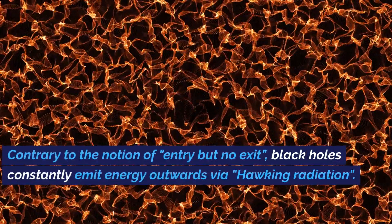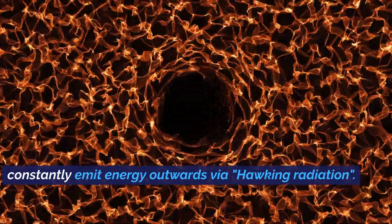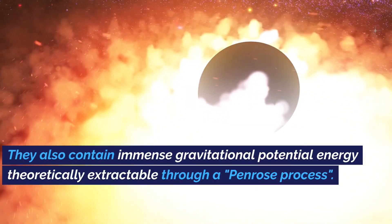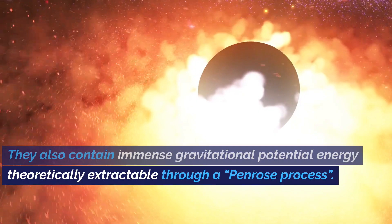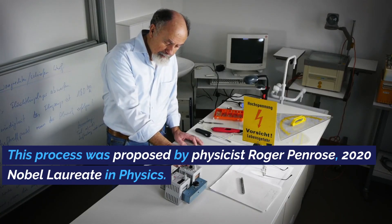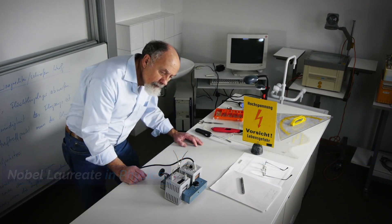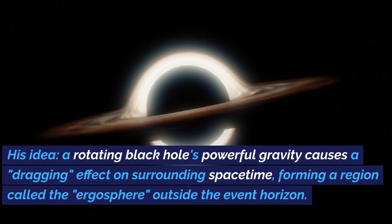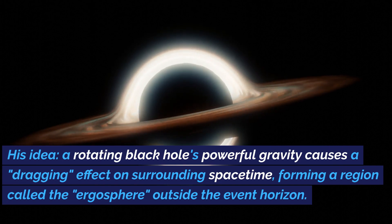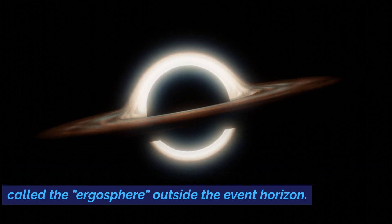Contrary to the notion of entry but no exit, black holes constantly emit energy outwards via Hawking radiation. They also contain immense gravitational potential energy, theoretically extractable through a Penrose process. This process was proposed by physicist Roger Penrose, 2020 Nobel laureate in physics. His idea: a rotating black hole's powerful gravity causes a dragging effect on surrounding spacetime, forming a region called the ergosphere outside the event horizon.